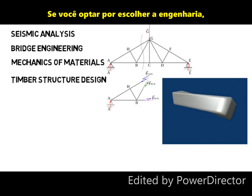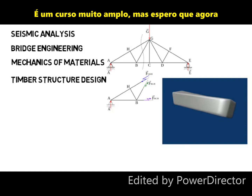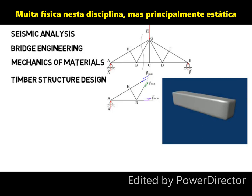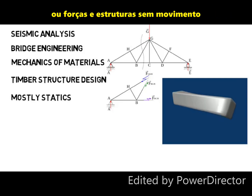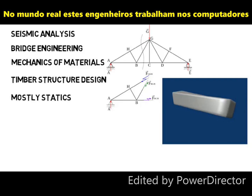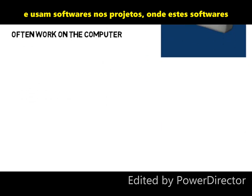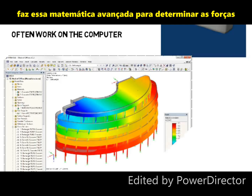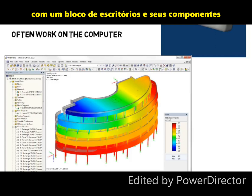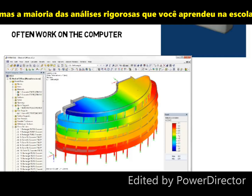Even if you choose structural engineering you could still take many different classes from the other structure students. It's a very broad major. Lots of physics in this discipline, but mostly statics — forces and structures without movement. In the real world, these engineers often work on the computer and use software for their designs, where that software does the advanced math to determine the forces throughout the structure, like you see here with an office block and its components. You may still have to do hand calculations, but most of the rigorous analysis you learned in school will be left to the software.